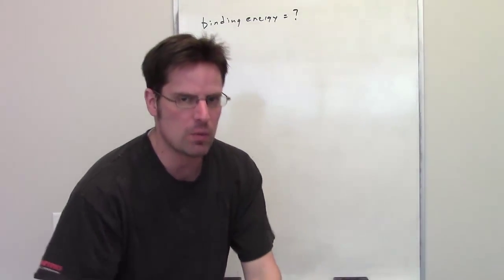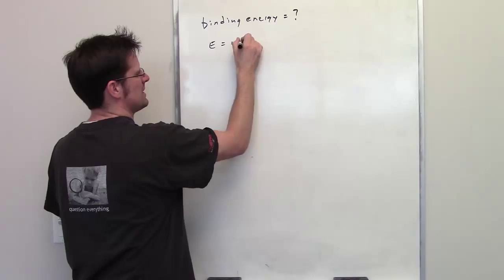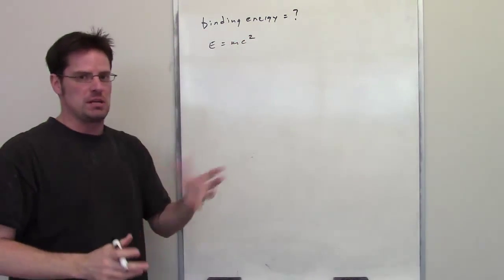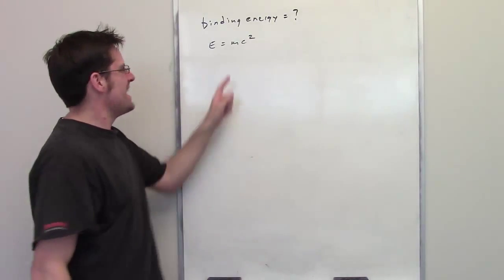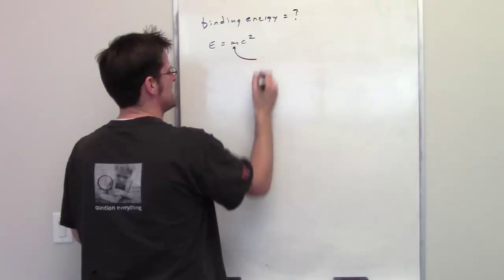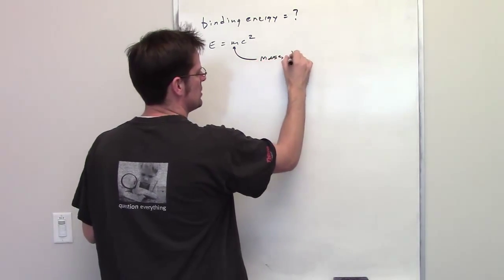Now in order to do that, what we're going to do is use Einstein's equation E equals mc squared, and E is going to be the binding energy. It stands for energy. The m, however, is the tricky part. The m is going to be the mass defect here.